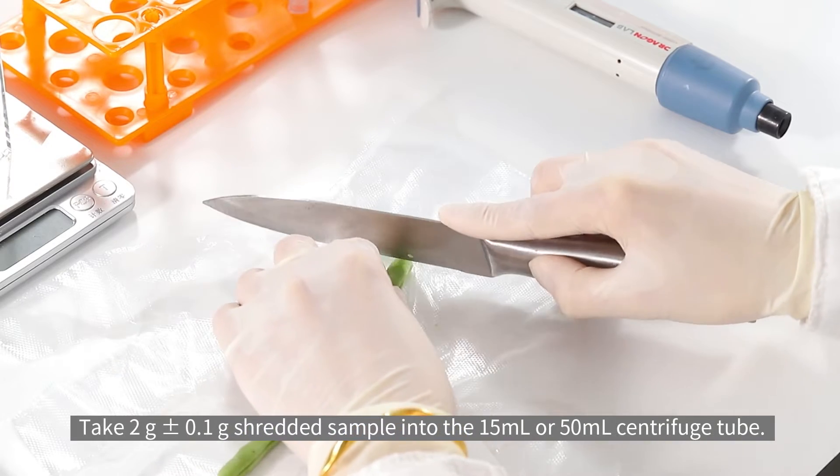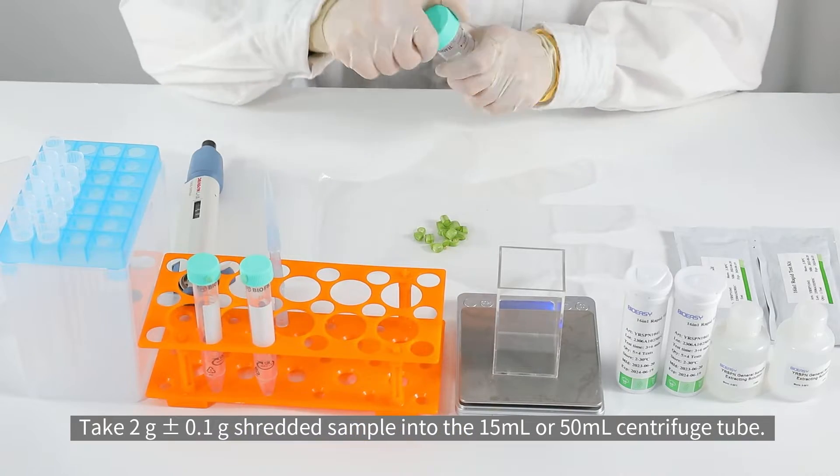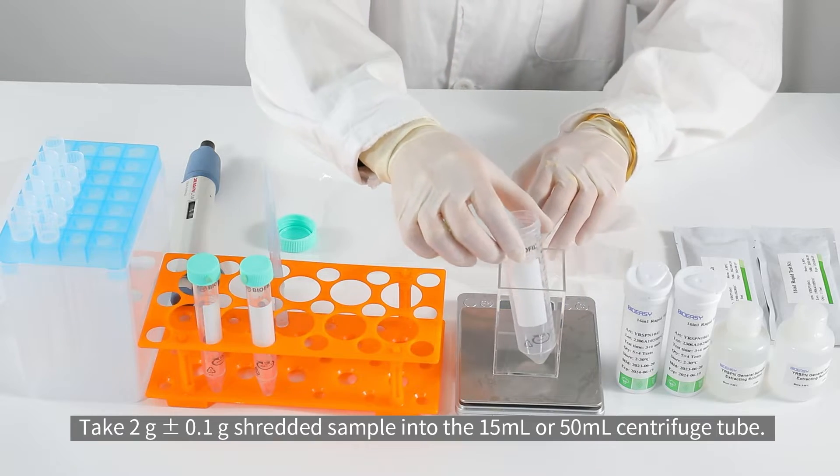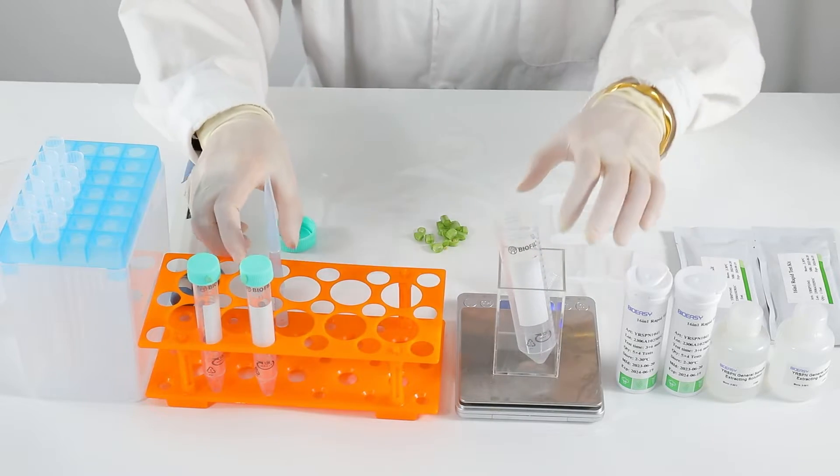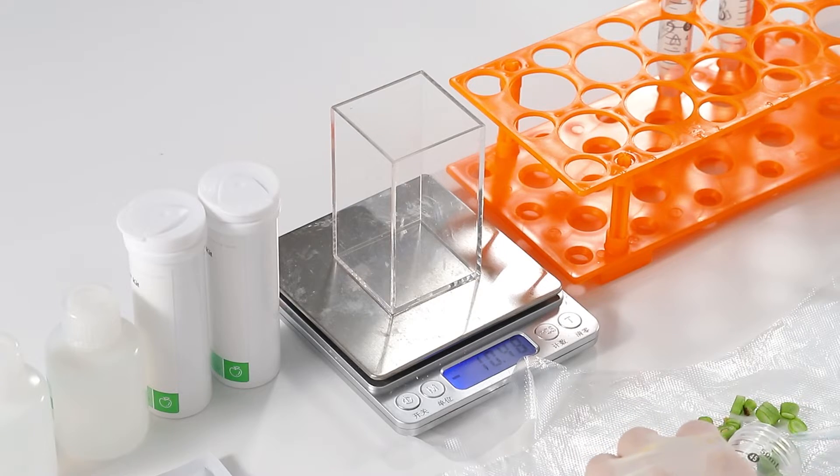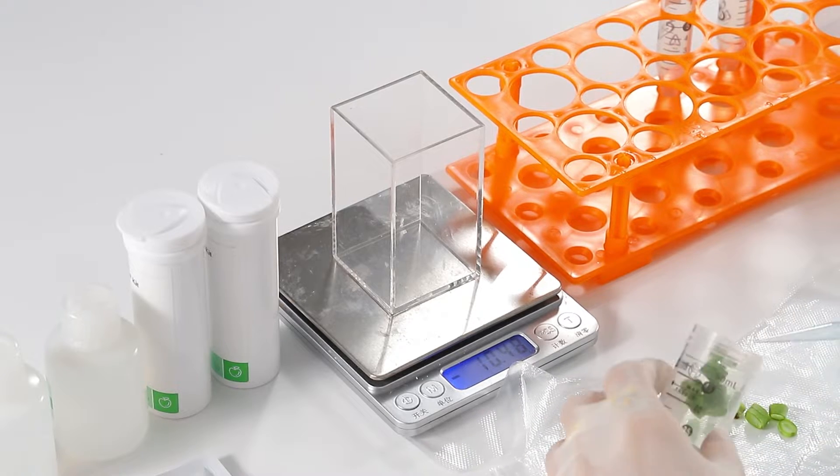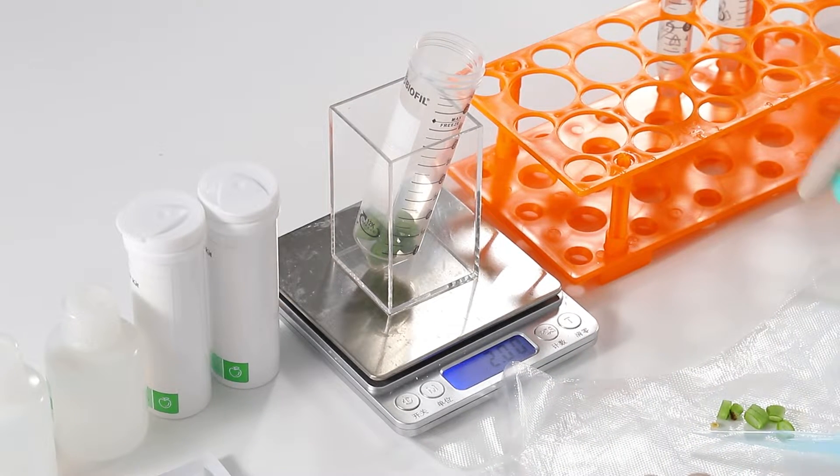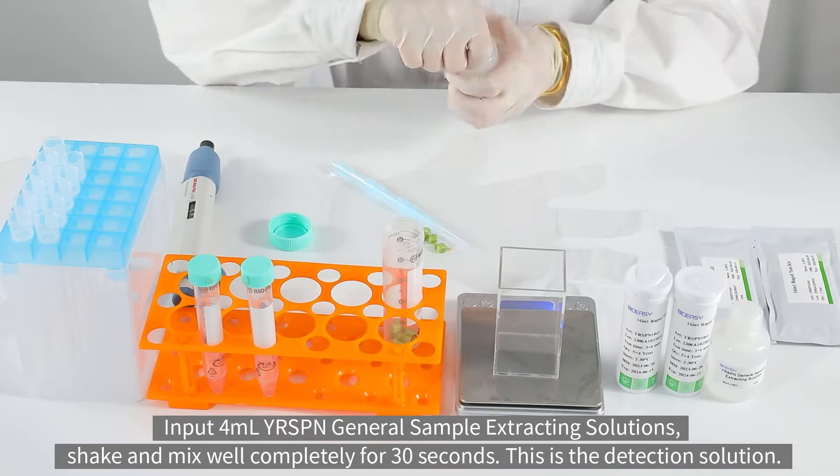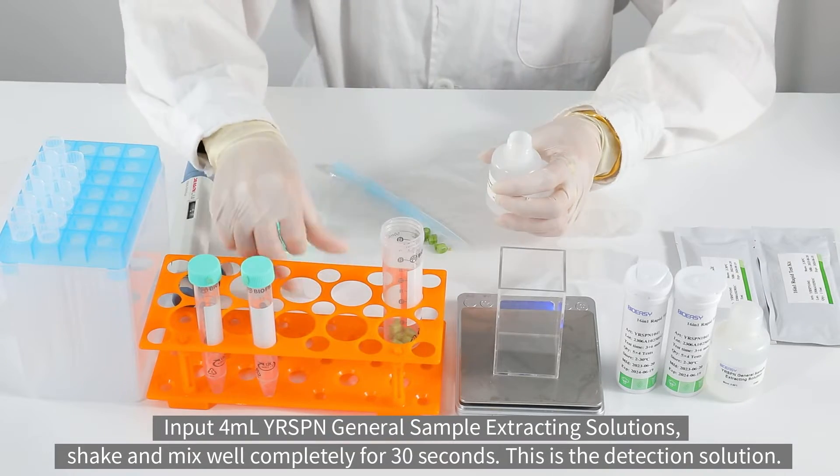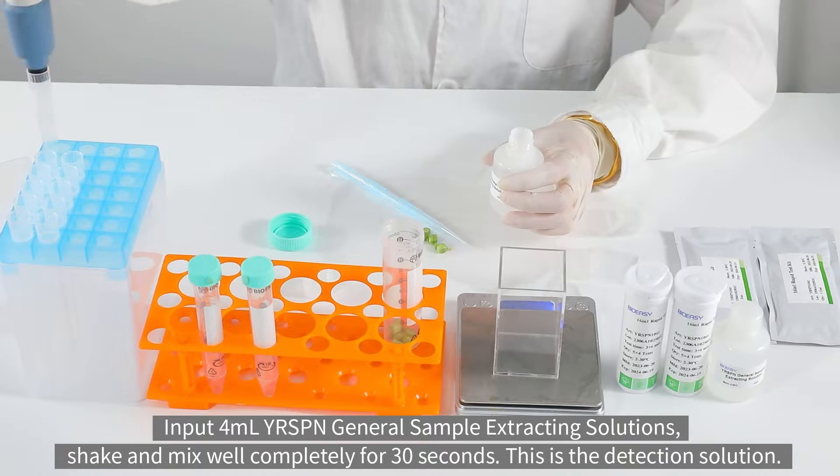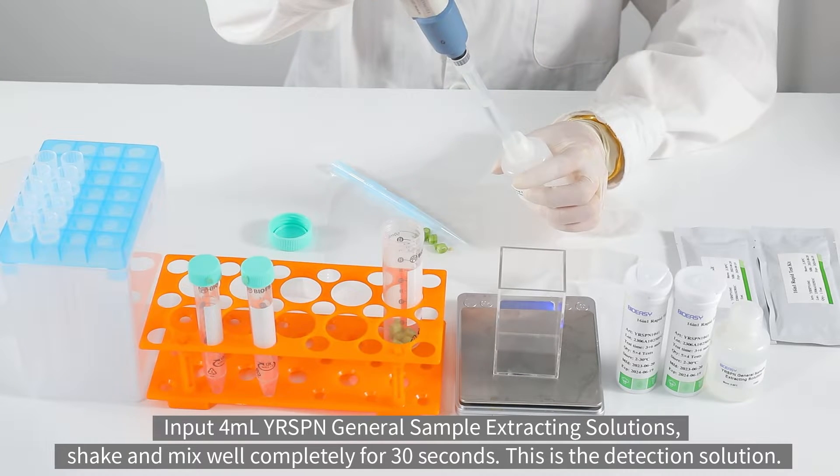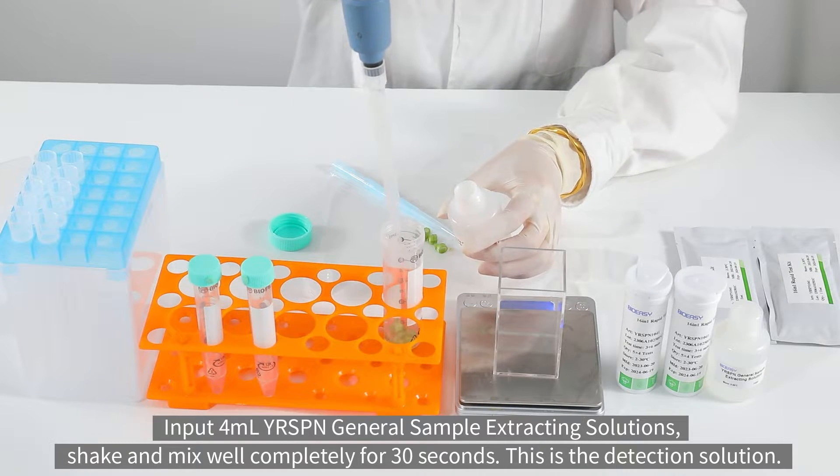Take 2g shredded sample into the 15ml or 50ml centrifuge tube. Input 4ml YRSPN General Sample Extracting Solutions. Shake and mix well completely for 30 seconds. This is the detection solution.